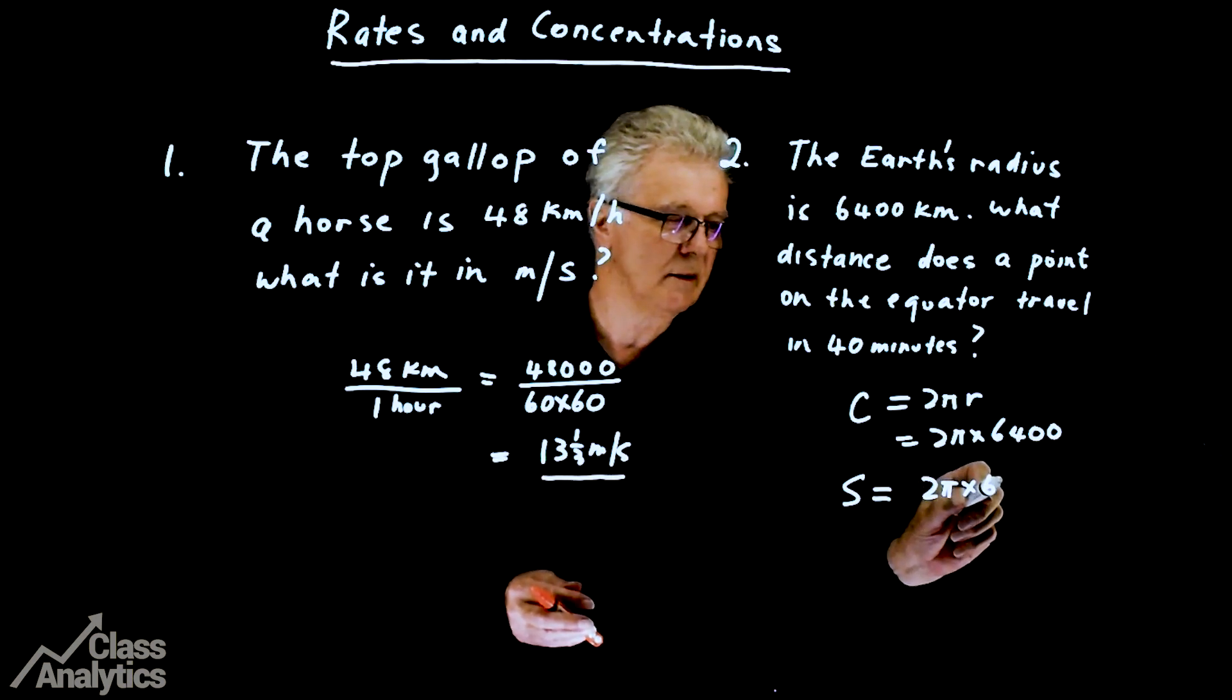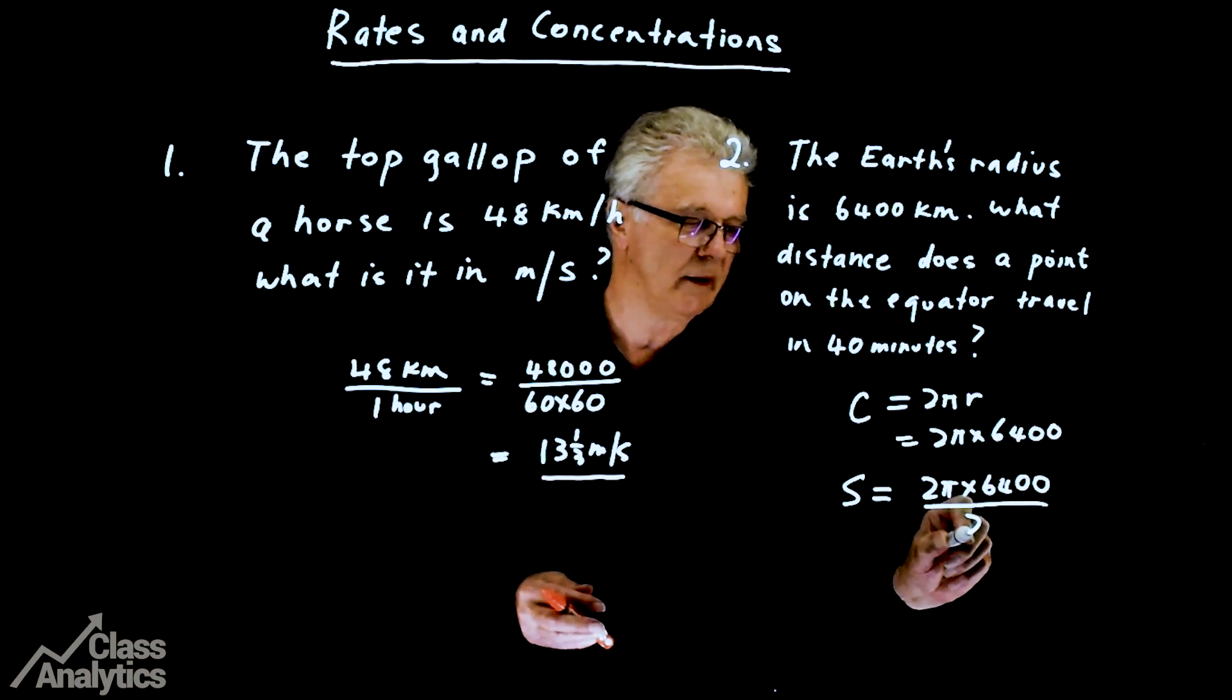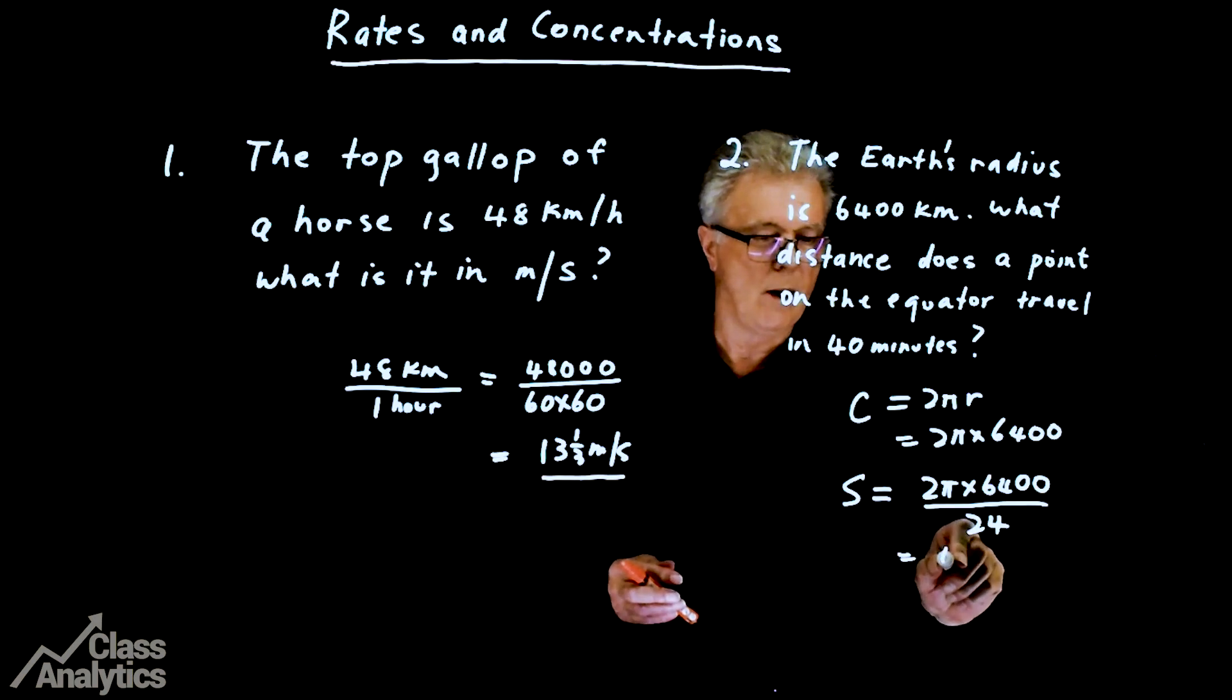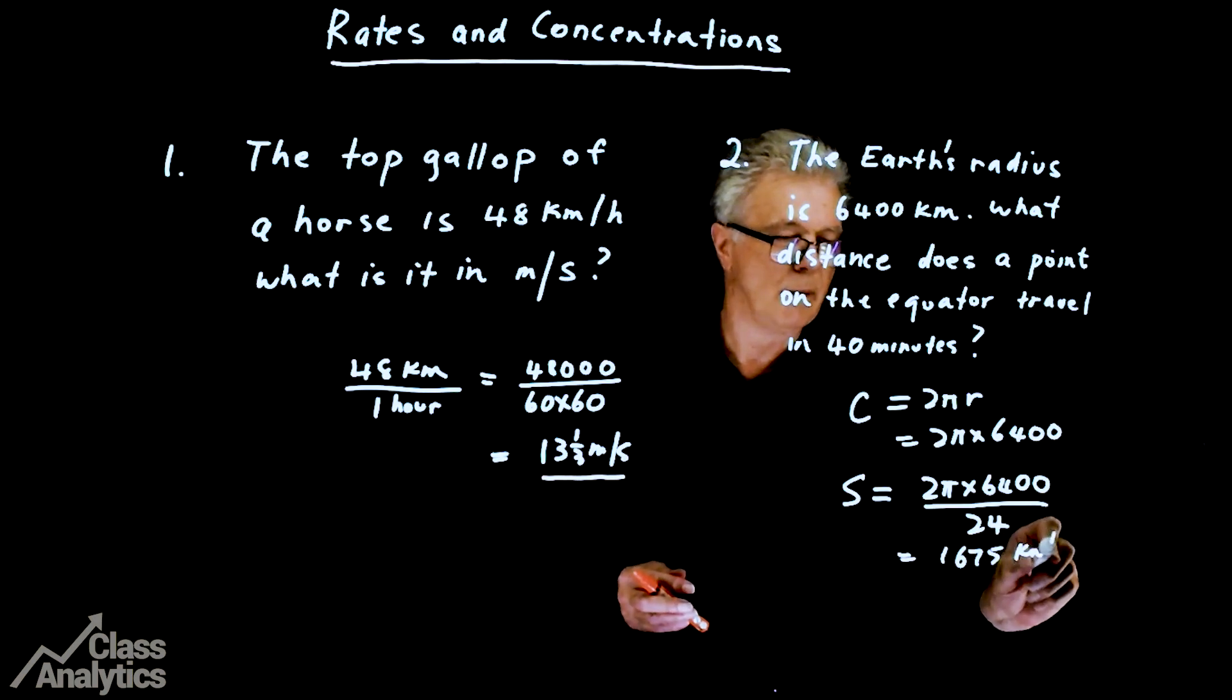Now, the Earth goes full circle in 24 hours. So we'll divide this by 24. And that gives me 1675 km per hour.